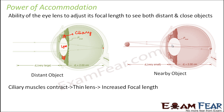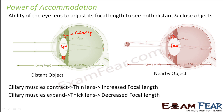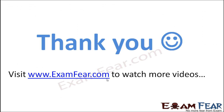When we look at a nearby object, the lens becomes quite bulged — it spreads out because the ciliary muscles expand. When the ciliary muscles expand, the lens also expands, and when the lens expands, the distance of the focus from the lens is reduced, so the focal length decreases. This ability of the lens to increase or decrease its focal length when viewing objects at different positions is known as the power of accommodation.